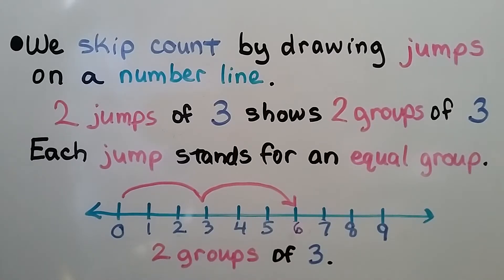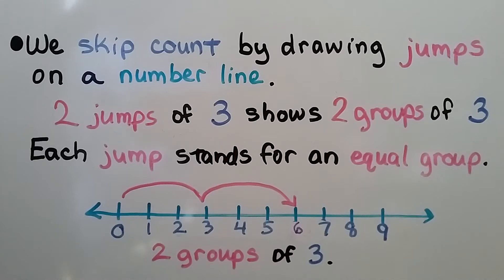Two jumps of three shows two groups of three. Each jump stands for an equal group. This number line and the jumps are showing two groups of three.